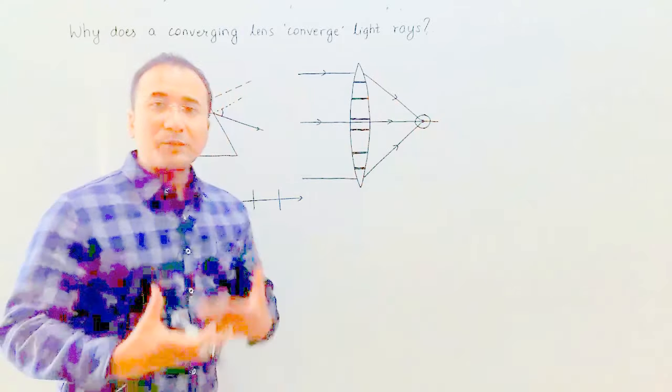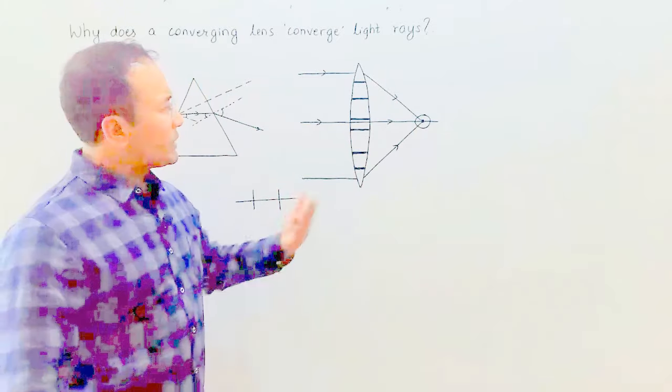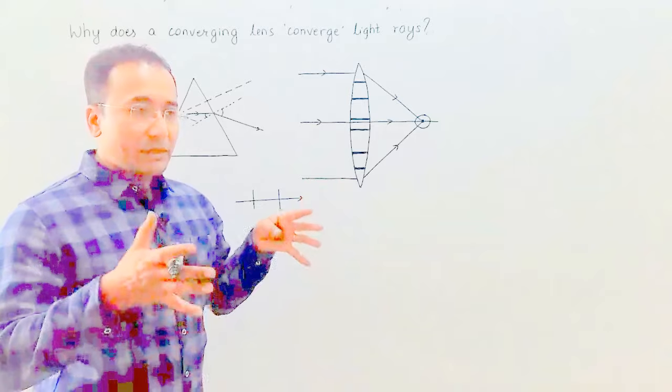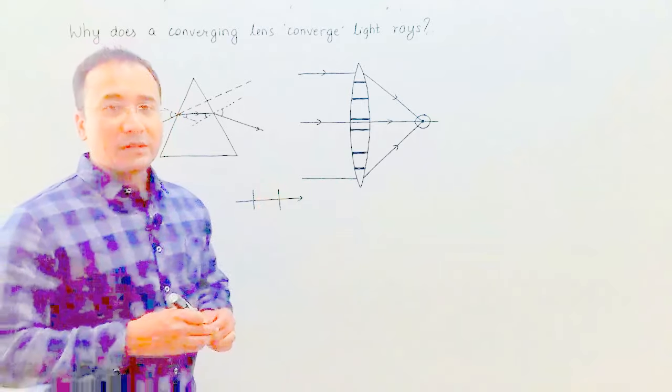Though they might not converge at the same point, they might do that at different points, but still they have to converge because of the action of the many prisms in the convex lens.